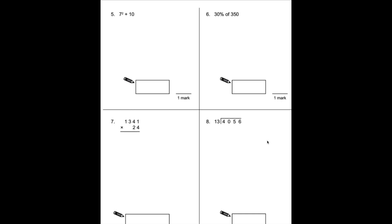Number 5: we have another example of BODMAS. We need to remember to do our powers first. So 7² is the same as 7 times 7, which equals 49, plus the 10 is 59.